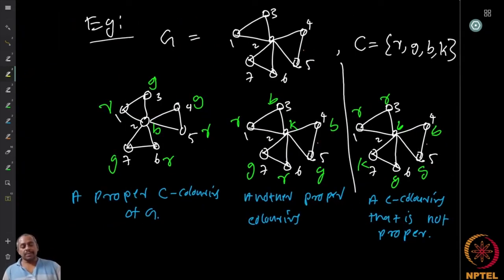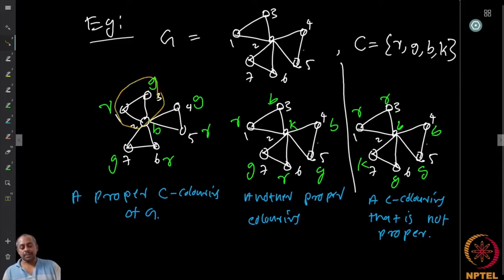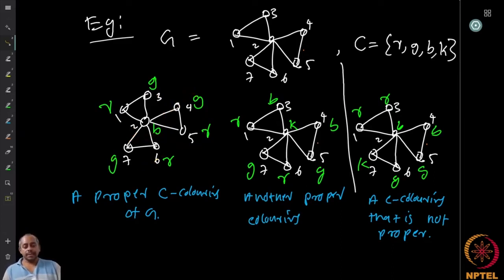Here are some examples. We have a graph G with a coloring where the set C is {R, G, B, K} — red, green, blue, and black. Here is a proper coloring of G using colors in C: I color the center vertex with B. These vertices cannot be colored B, so one gets G. The next must differ from both B and G. But I can reuse G here because these vertices are not adjacent. So I use just three colors to color all vertices — a proper coloring.